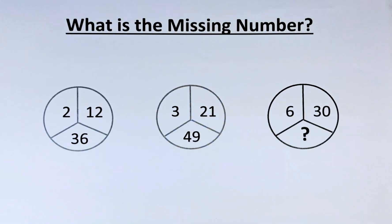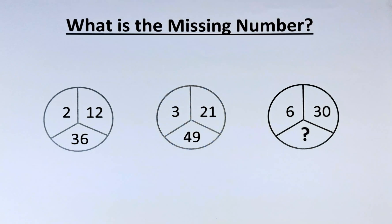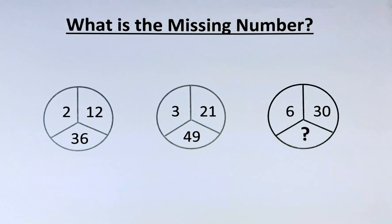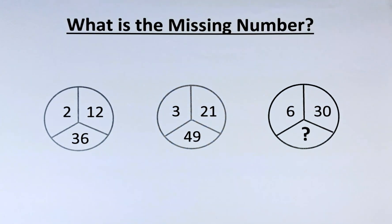Welcome back! This is the solution to the circle puzzle. There are 3 circles in front of us. In the first circle we have 2, 12 and 36. In the second circle we have 3, 21 and 49. And in the last circle we have 6, 30 and a question mark. So if you want to know the solution, let's do this.